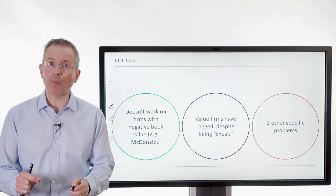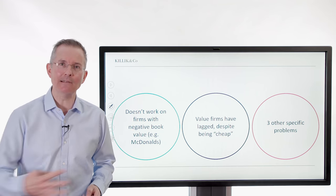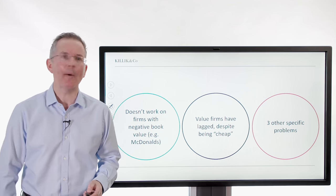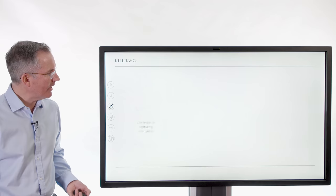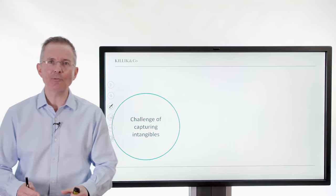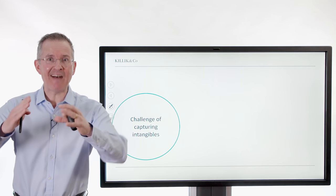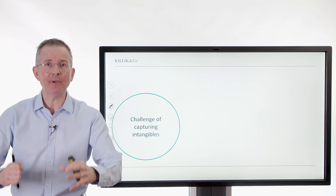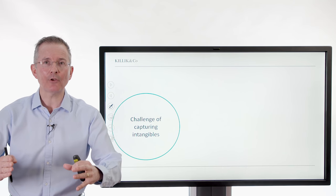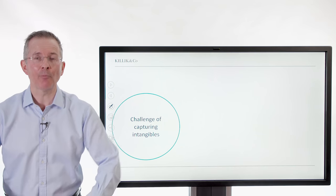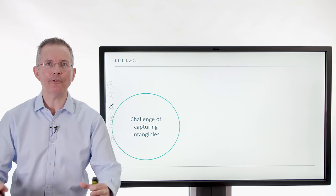And there are three other technical problems which play into this. These are the challenge of capturing intangibles. So the book for a lot of companies simply doesn't reflect a lot of the value in the company. The people are missing, the brands are missing, all that kind of good stuff.